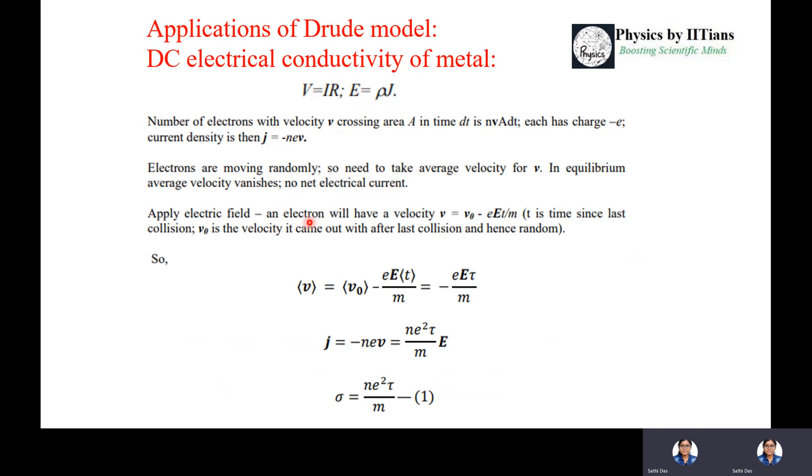When I apply electric field externally, the electron will have velocity v = v₀ - eEt/m, where E is the external electric field, t is time since last collision, and v₀ is the velocity after the last collision in random direction. So ⟨v⟩ = ⟨v₀⟩ - eEτ/m. Therefore j = -ne⟨v⟩ = ne²τE/m, where σ = ne²τ/m. This successfully establishes Ohm's law in the metal case.